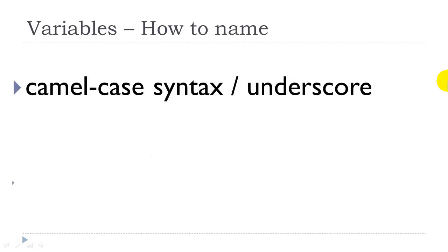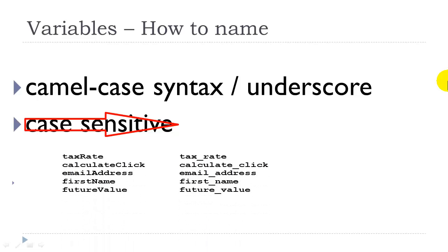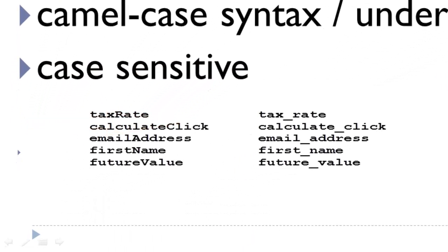You will use either the camel case syntax or the underscore syntax if the variable name contains more than one word. Remember that JavaScript is case sensitive. So here is an example on the left of using the camel case syntax where the first letter of the second or third or fourth word is capitalized. In the right-hand column we have the underscore notation.